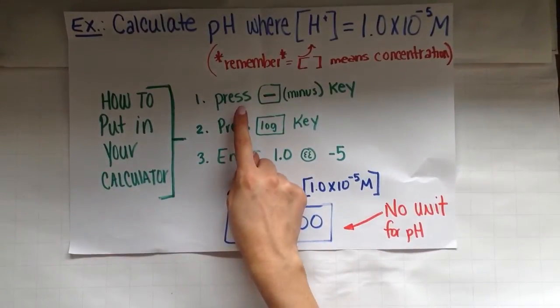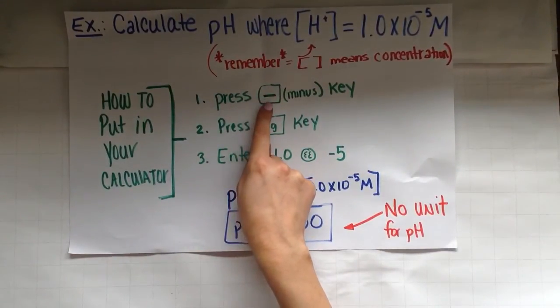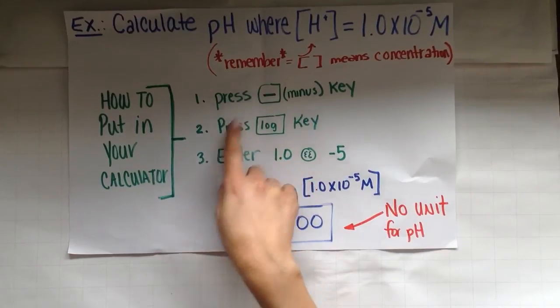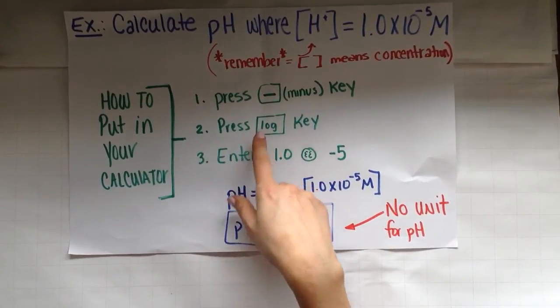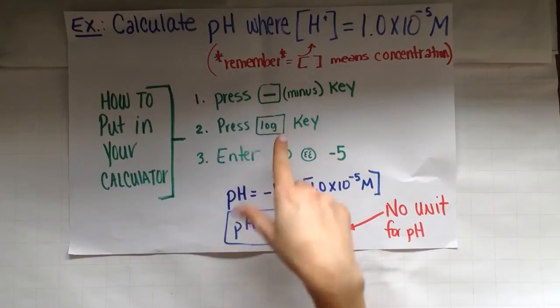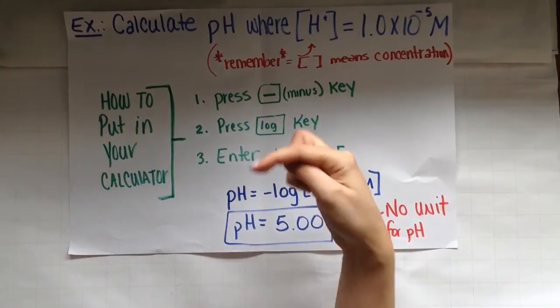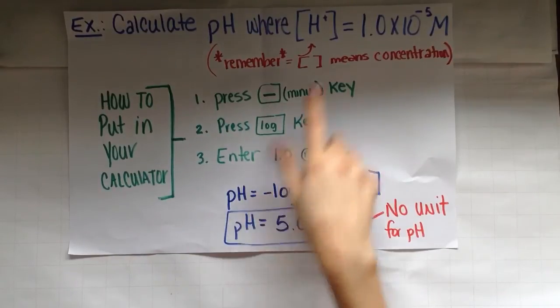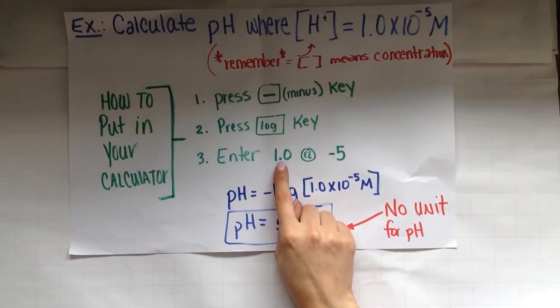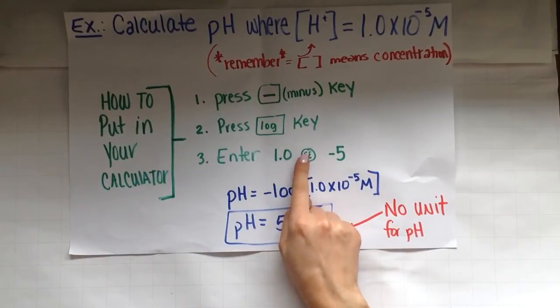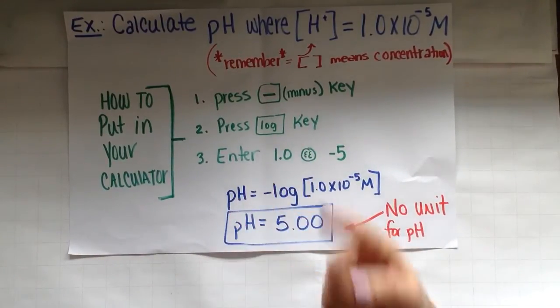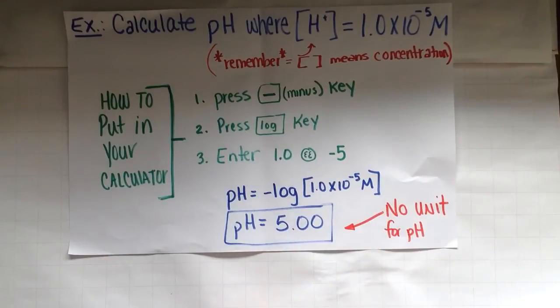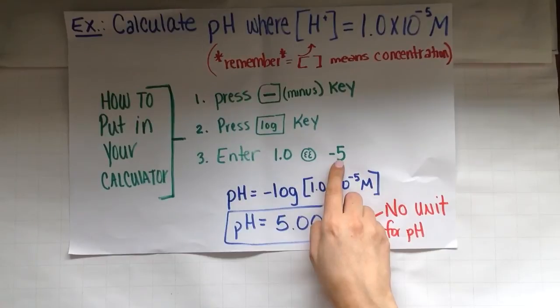So now, remember we have to press the minus button because it's negative log. And then you want to press your log key. Your log key might be an actual key or you might have to hit second and find the log. So look at your calculator now. Then we're going to put in this number. And if you remember, we've learned how to put in numbers that are in scientific notation. And you'll put 1.0, hit the little round EE button. Again, look on yours. Yours just might be a capital E button. Negative five.